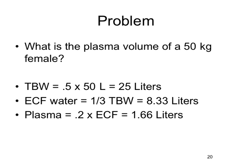Very simple calculation: what is the plasma volume of a 50 kilogram female? This is very straightforward. First, you must calculate the total body water. We know that the total body water for a female is 50 percent of her weight in kilograms, giving a volume expressed in liters. So 0.5 times 50 gives us a total body water of 25 liters.